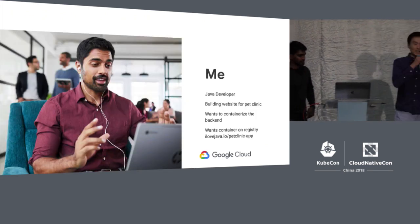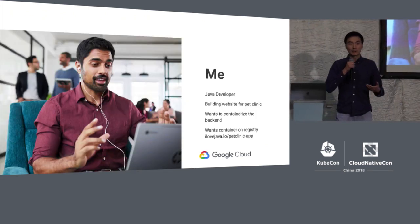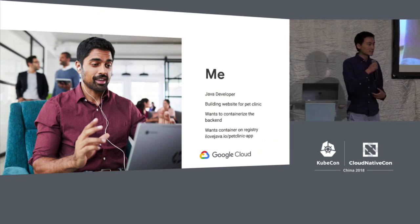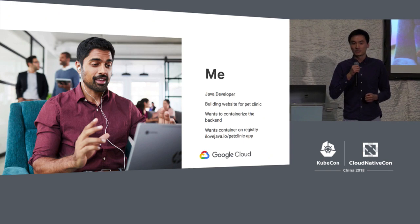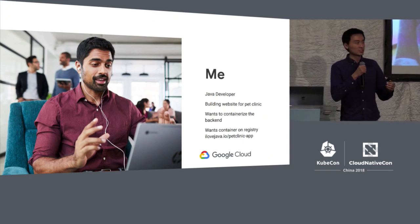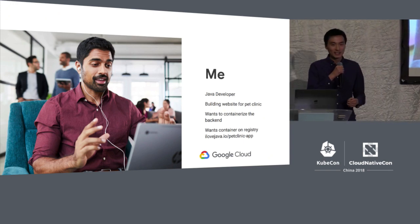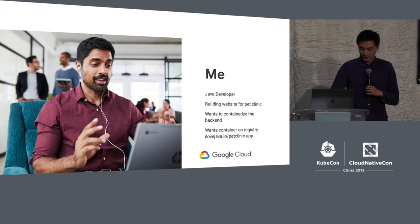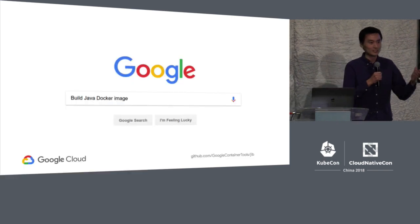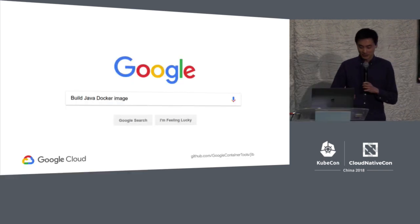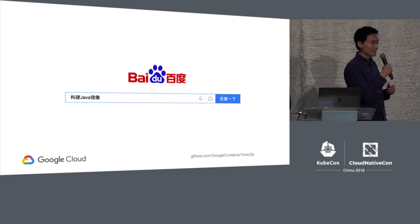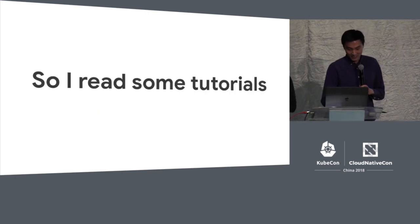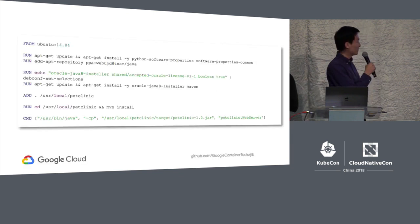To illustrate how confusing that can be, let's start with a story about an experienced Java developer taking a stab at building a container image. Say I'm a Java developer building a website for a pet clinic. I want to containerize my Java back end, and I want my container image on my registry at ilovejava.io/petclinicapp. So what do I do first? I search 'build Java Docker image' or go to Baidu, read the top tutorials, and write a Dockerfile.